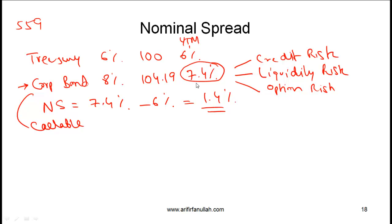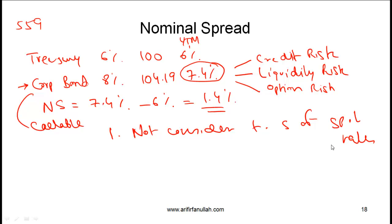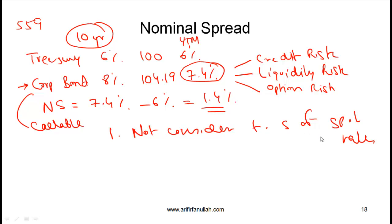You also need to understand two issues with the nominal spread. The first issue is that it does not consider the term structure of spot rates. For example, if these are 10-year bonds, we are not considering that interest rates might change over this 10-year period, or that the 10-year spot rate might differ from the 2-year spot rate. We are simply taking the YTM on the corporate bond of 7.4% and the YTM on the treasury of 6% and taking the difference, ignoring how spot rates change over time.